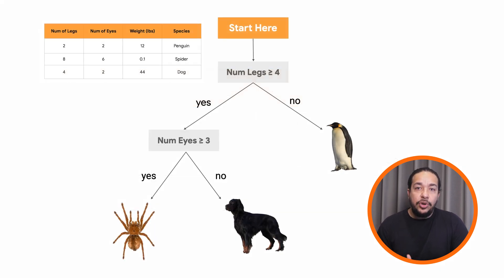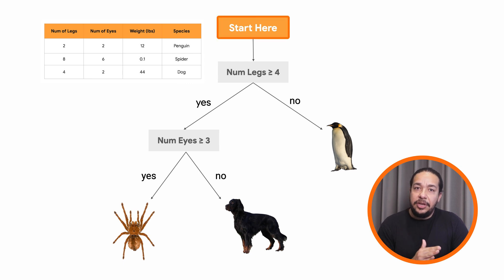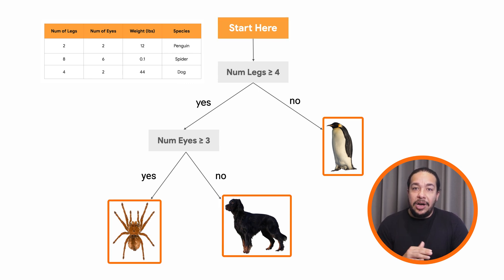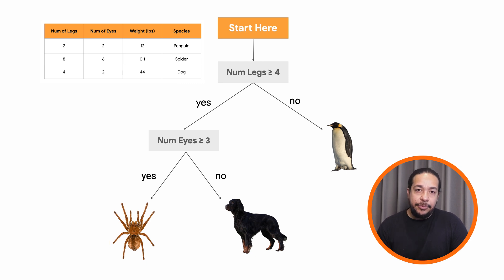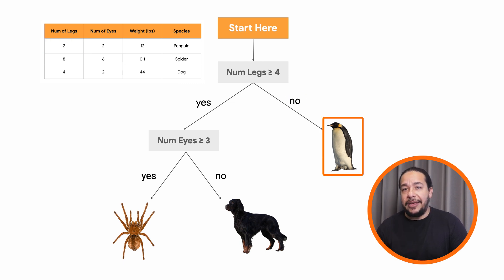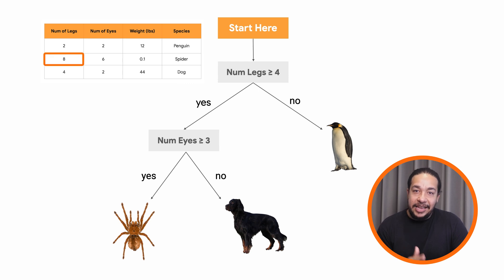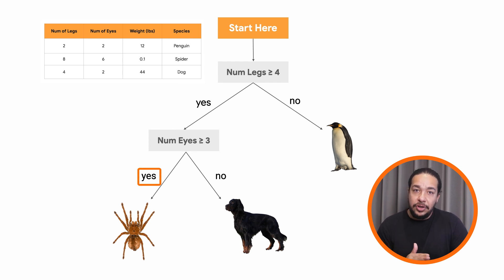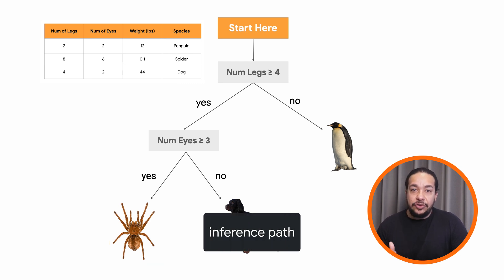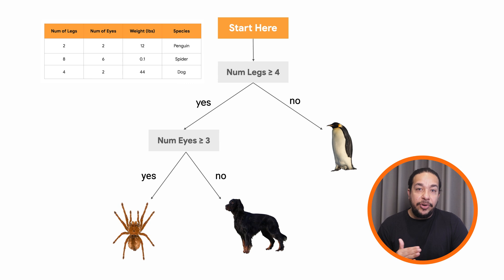These questions form a decision tree. For example, we could have this decision tree for our data here. For each entry, we can route from the root at the top to one of the leaf nodes at the bottom according to the conditions. Our first animal has two legs, so the root condition is false, leading to a prediction of a penguin. Our second animal has eight legs, so the root condition is true, leading us to count the eyes. The number of eyes condition is true, so we are led to a prediction of a spider. The set of visited nodes is called the inference path. This is, of course, a simplified example, but you can already see that the resulting pattern of decision grows into a tree shape.